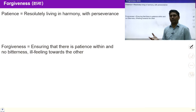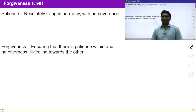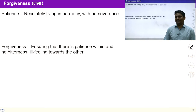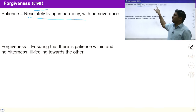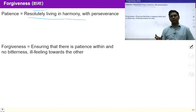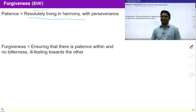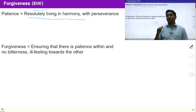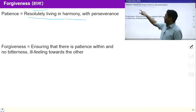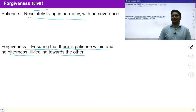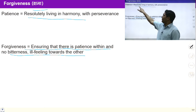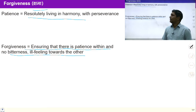Now we are going to talk about forgiveness, fortitude, compassion, sincerity, and balanced diet. Forgiveness has two parts: the first is to live resolutely in harmony with preservation, which is known as patience; the second is to live with no bitterness, no ill feeling — this is forgiveness. Forgiveness means ensuring patience within and no bitterness or ill feeling towards the other. It means I am unaffected from the behaviour of the other, living unaffectedly from the behaviour of the environment.